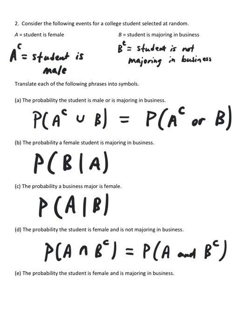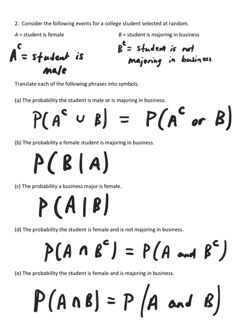And then finally, part E, the probability the student is female and is majoring in business. And so that's the probability of A and B. Feel free to use the union or intersection or you can use the words or, or, and freely.